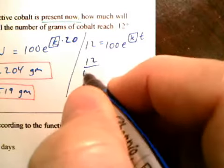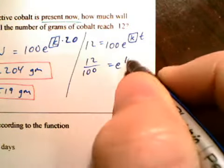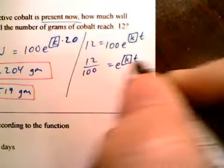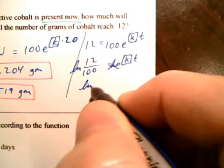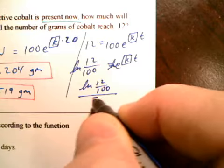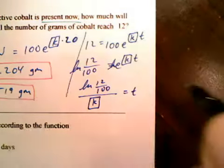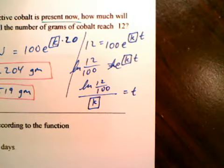First thing we're going to do is divide by 100. And then we're going to take the ln of both sides. And we get ln of 12 over 100. And divide that by our K. And that's our T. Let's go ahead and do that. ln of 12 divided by 100, don't worry about reducing the fraction, divide by K.